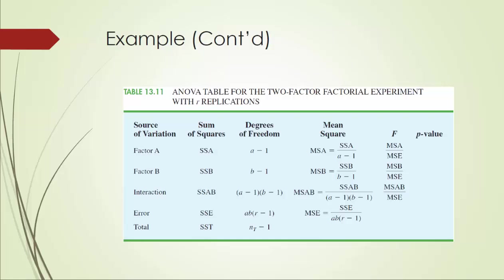Compared with one-way ANOVA, in which we have only two sources of variation, in two-way ANOVA we have four sources of variation. As a result, we have five sum of squares, five degrees of freedom, four mean squares, three F-test statistics, and three p-values.